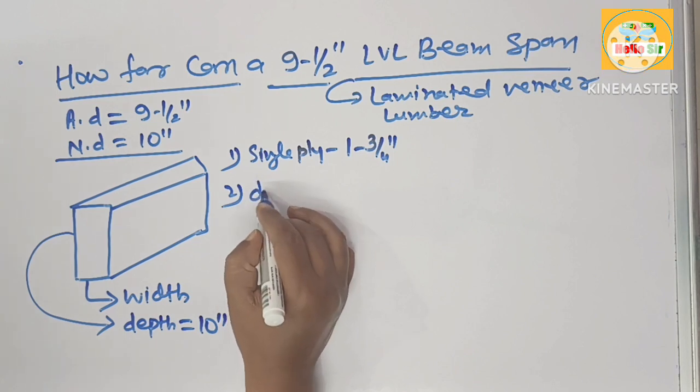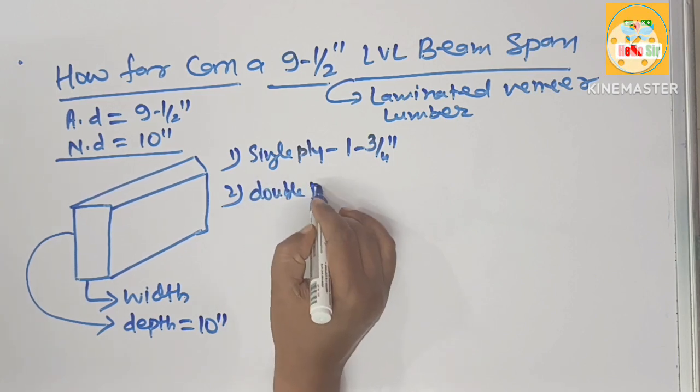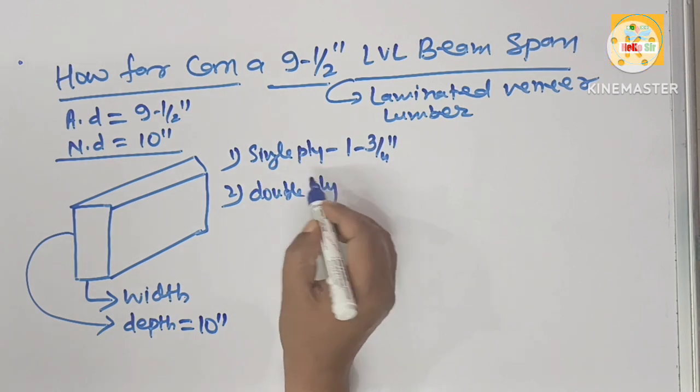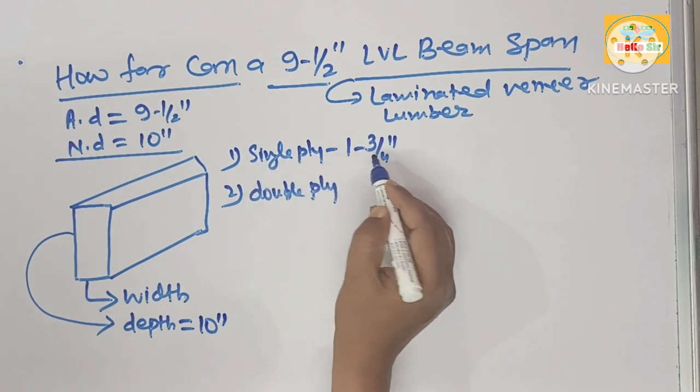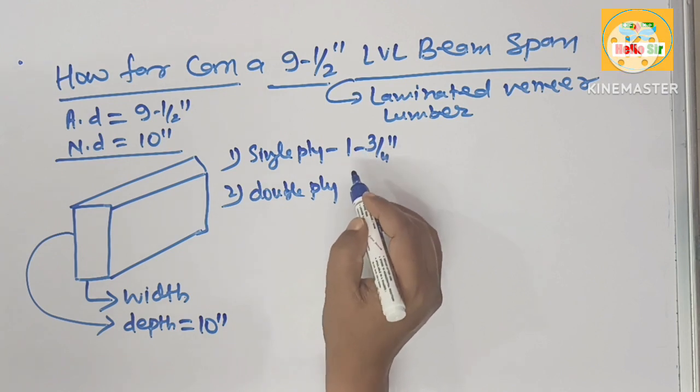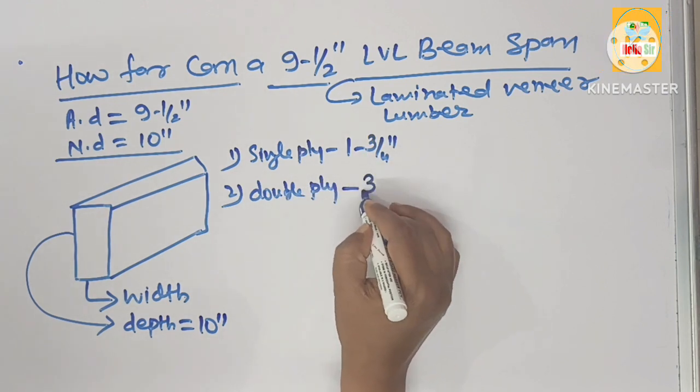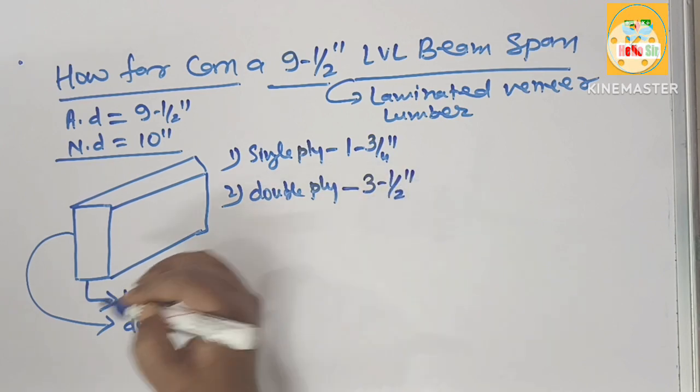It comes in also double ply and double ply of this LVL can be made by sandwich of 2 single ply LVL with adhesive material. The thickness of double ply is 3½ inches.